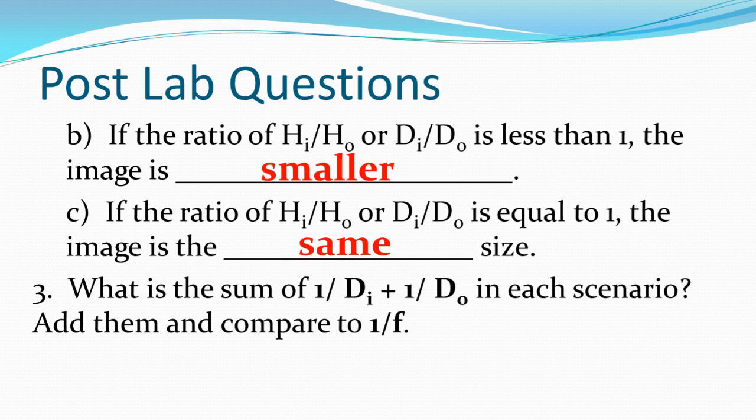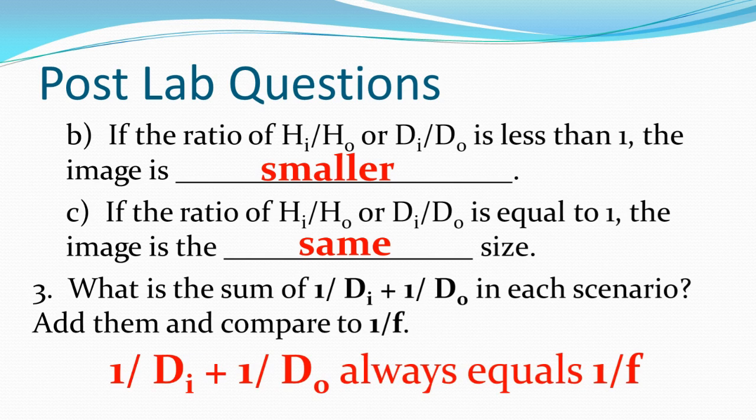This relationship of hi/ho or di/do is where we get the concept of magnification. If we have a magnification bigger than 1, the image is bigger. If the magnification is less than 1, the image is smaller than the original object. When you took the inverse of di and do and added them together, you ended up with the inverse of the focal point.